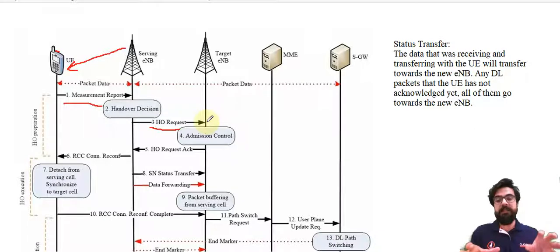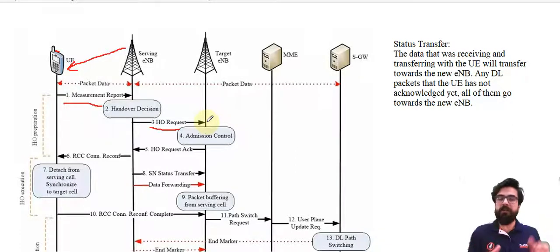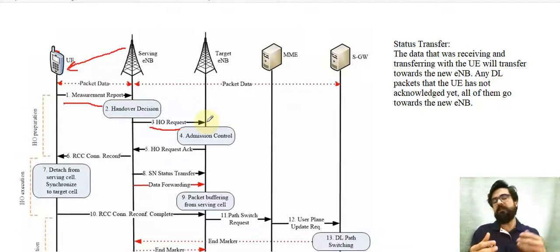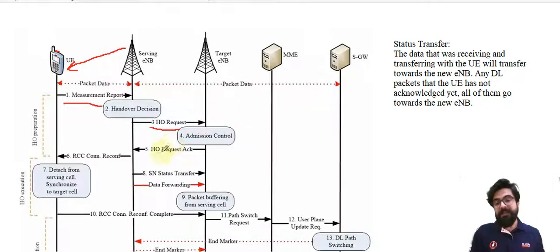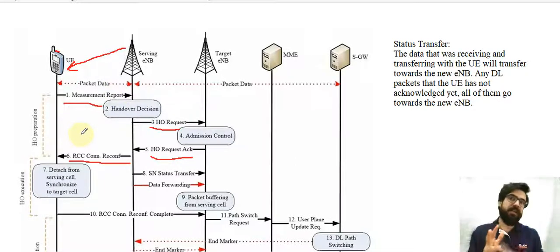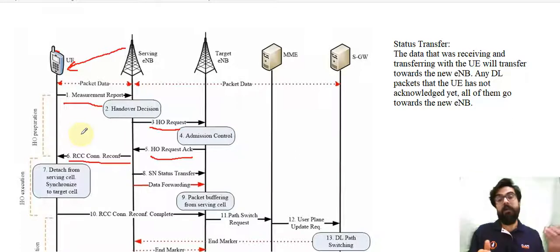The target eNodeB goes into admission control and thinks: okay, am I going to accept the handover? Do I have sufficient resources? Is this UE going to use lots of downlink, requiring lots of bandwidth allocation? These are the questions the target eNodeB considers, and maybe it rejects. If it accepts, it sends a handover request acknowledgment back towards the serving eNodeB, which forwards it towards the UE. That message contains the frequency, cell ID, scheduling, and everything needed to connect to the new eNodeB.